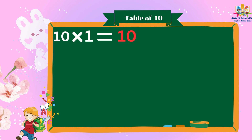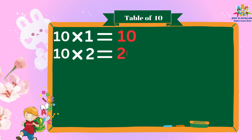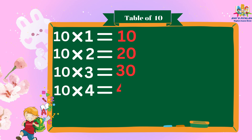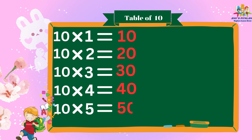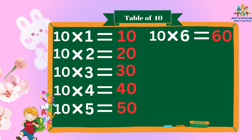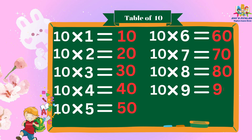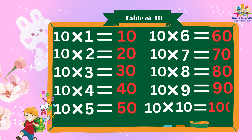10 1's are 10. 10 2's are 20. 10 3's are 30. 10 4's are 40. 10 5's are 50. 10 6's are 60. 10 7's are 70. 10 8's are 80. 10 9's are 90. 10 10's are 100.